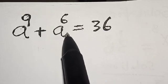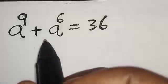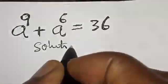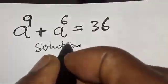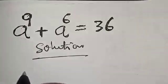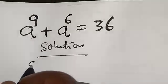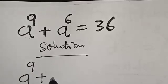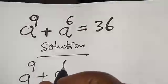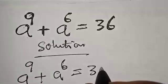But before we proceed, please don't forget to like, share, comment and subscribe. Thank you. Solution. We have the given equation: A raised to power 9 plus A raised to power 6 is equal to 36.